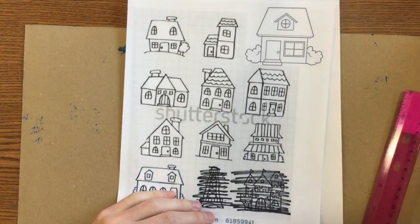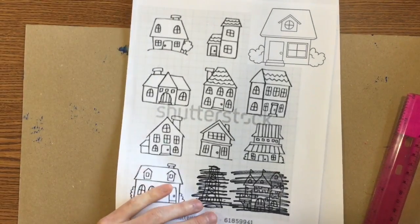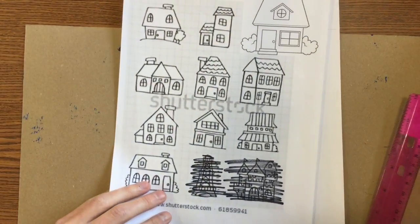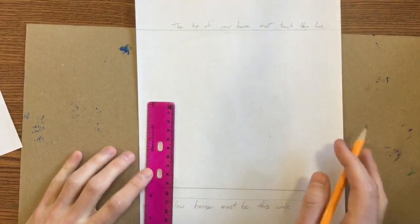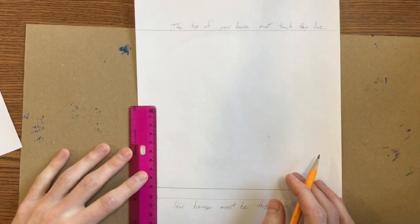You can do one of the houses off here. You can change one up if you would like. It is up to you. But I need to see a nice neat house. Use your ruler so that you get some nice edges.